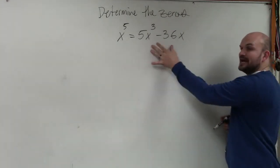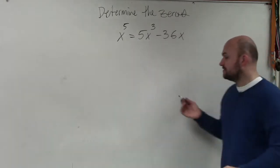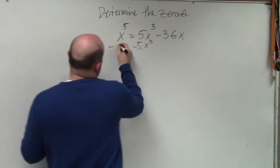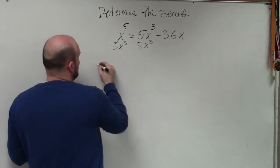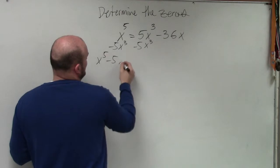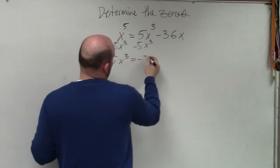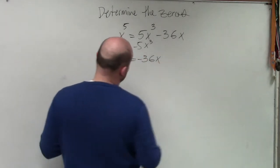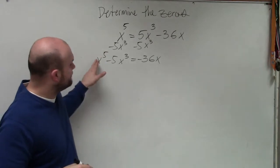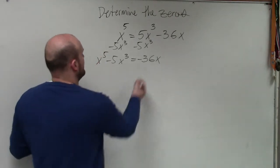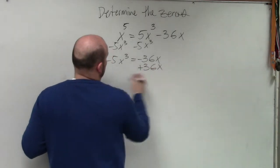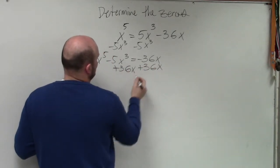So you guys can see I have terms on both sides. The first thing we're going to do is get them all to the same side. Now, I know a lot of you want to think, well, why don't you just subtract the x to the fifth? The reason why is because when I'm factoring, I always like to have my leading term to be positive.